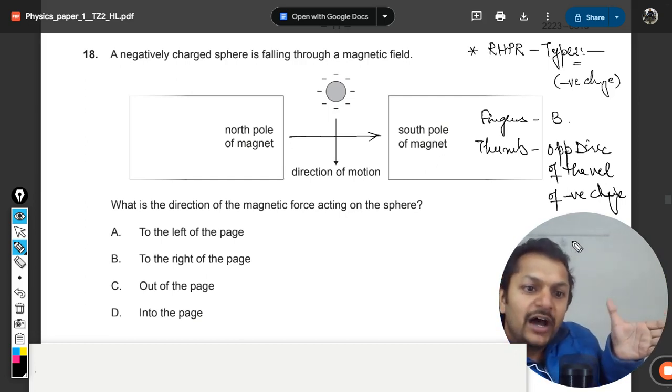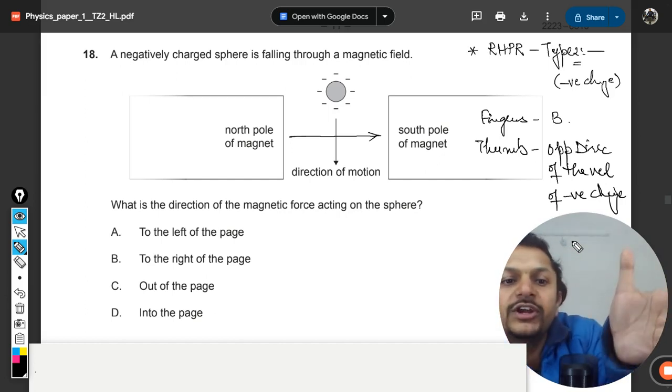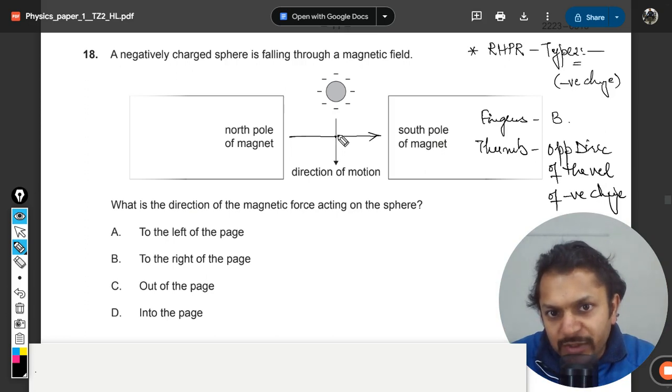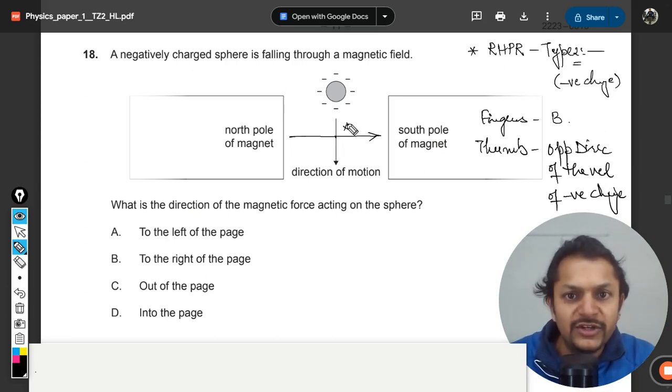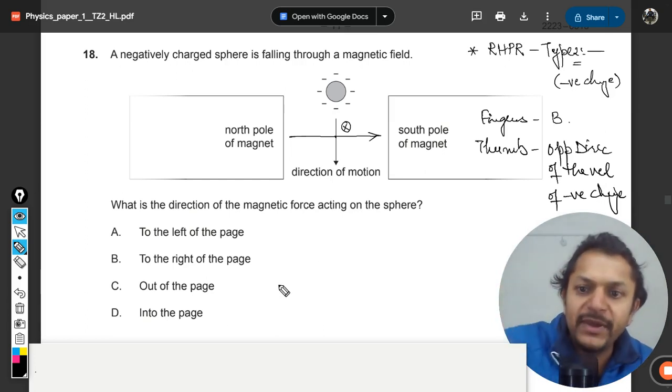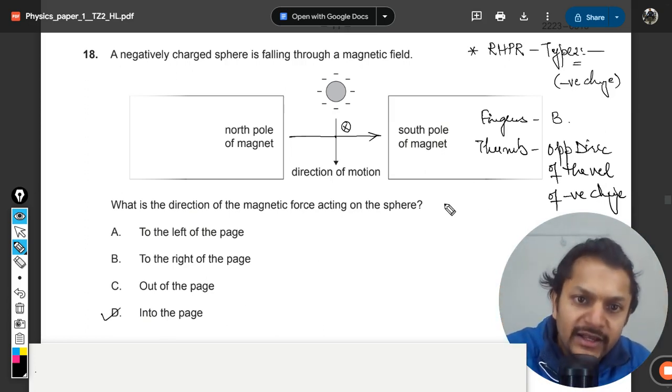So this is the magnetic field like this and electron is going down, but I would be keeping my thumb in the upward direction. My palm is clearly looking towards the screen, which means that the force experienced here will be into the page, going into the screen. So into the page, the answer will be D.